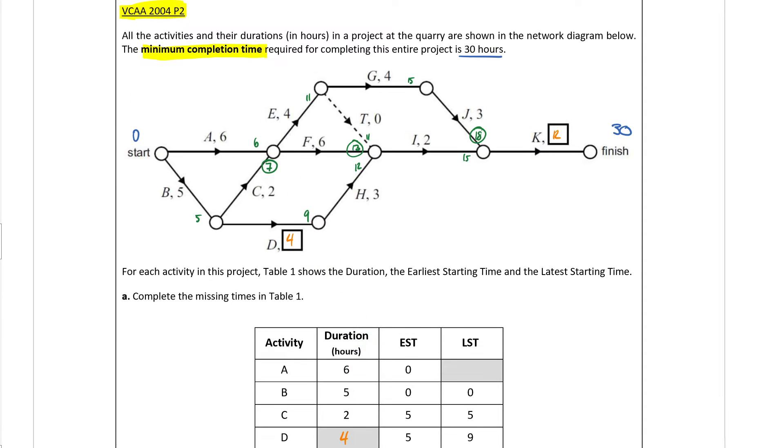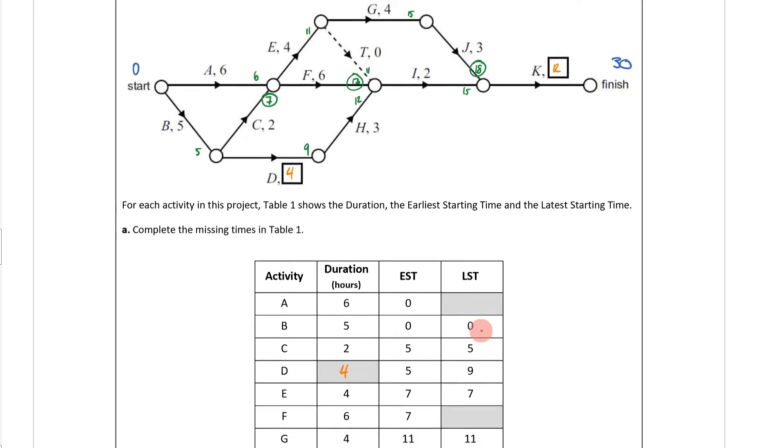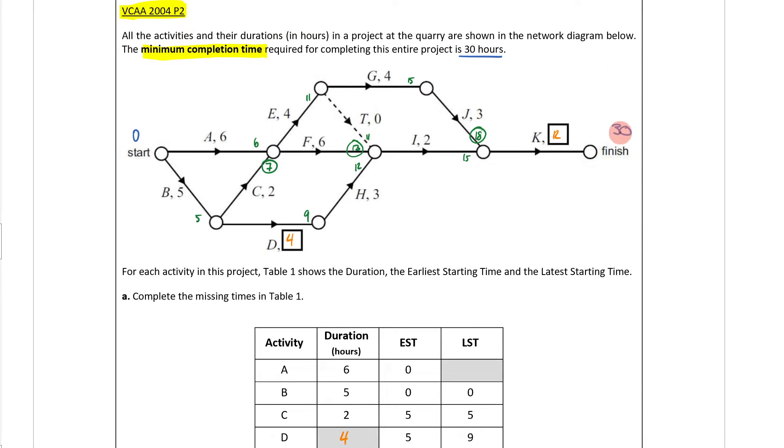Now I'm going to do my backward scanning because I need to figure out some LSTs here as well. So if I do my backward scanning now, I'm going to go 30 minus 12 is going to be 18. And I'll go 18 minus 3 is going to be 15. 15 minus 4 is going to be 11. Now I need to go 11 minus 4 is going to be 7. Now I'll come back here for a moment. 18 minus 2 is going to be 16.